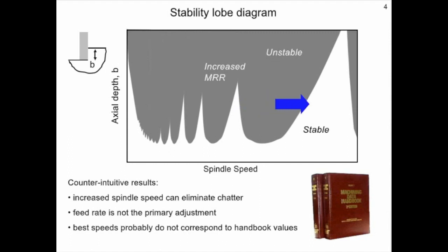We see that there are particular spindle speeds where increased axial depths of cut can be achieved. These are identified as the best speeds on the diagram and show the peaks of the stability lobes.